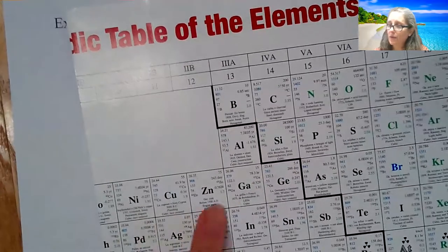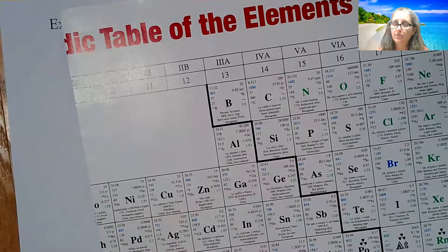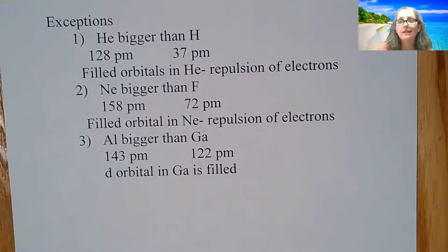And that is because you start to involve the d orbital. That's the fourth period. That's where you involve the three d's. And so you have a little bit, you have less shielding. So therefore it kind of cinches in the size.